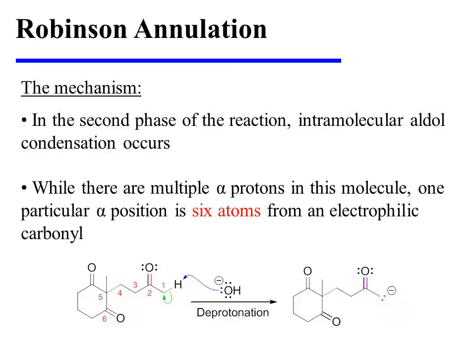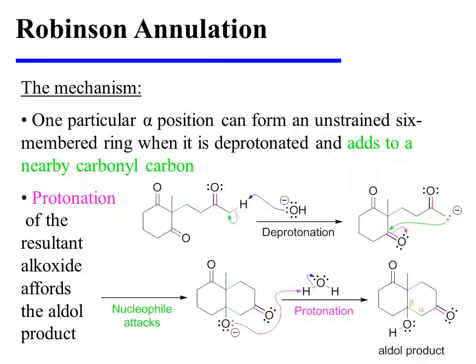In the second phase of the reaction, intramolecular aldol condensation occurs. While there are multiple alpha protons in this molecule, one particular alpha position is six atoms from an electrophilic carbonyl. It is the deprotonation of that one particular alpha position that leads to productive reaction, as the enolate attacks the electrophilic carbonyl and forms an unstrained six-membered ring. Protonation of the resultant alkoxide affords the aldol product.